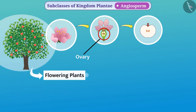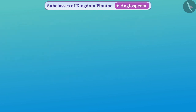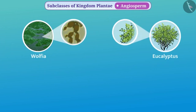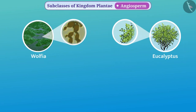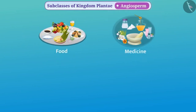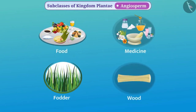Angiosperms are the largest class of plants. They range from small plants such as Wolffia to giant trees such as eucalyptus. They are found in various places. From angiosperms we get food, medicines, fodder, wood, and other products.